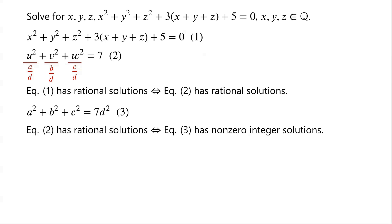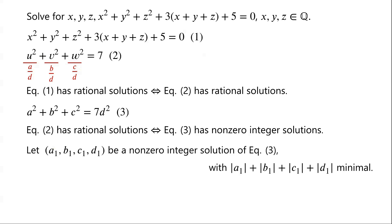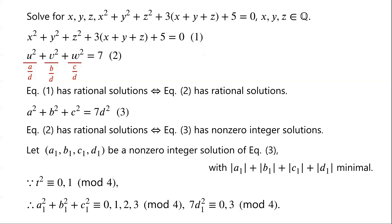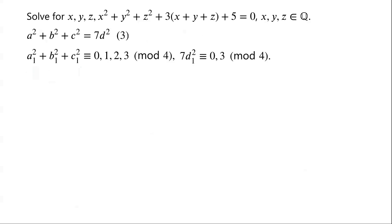Now we can see that equation 2 has rational solutions if and only if equation 3 has non-zero integer solutions. Assume that (a1, b1, c1, d1) is a non-zero integer solution of equation 3 with |a1| + |b1| + |c1| + |d1| minimal. Because any perfect square t squared is congruent to 0 or 1 modulo 4, so a1² + b1² + c1² is congruent to 0, 1, 2, or 3 modulo 4. And 7d² is congruent to 0 or 3 modulo 4. This implies that for (a1, b1, c1, d1) to be a non-zero integer solution of equation 3, we must have a1² + b1² + c1² congruent to 0 modulo 4 and 7d² congruent to 0 modulo 4.